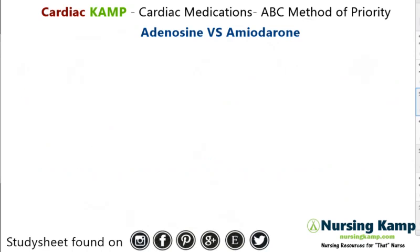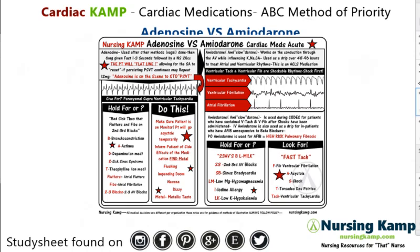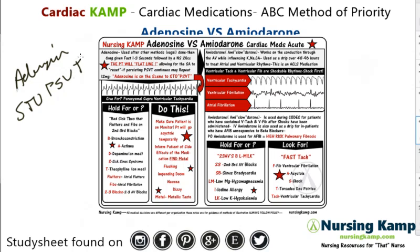Okay, so adenosine and amiodarone. The mnemonic for adenosine is: adenosine is on the scene to stop SVT. So it's generally given for PSVT — paroxysmal supraventricular tachycardia — which is a super fast rhythm.